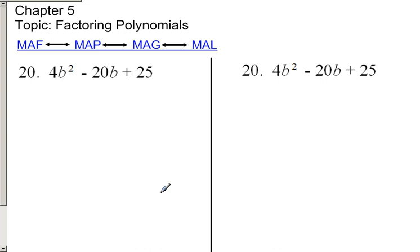When factoring polynomials, you always try to factor out a greatest common factor first. There is no greatest common factor here, so I'm going to show you how to factor this two ways.